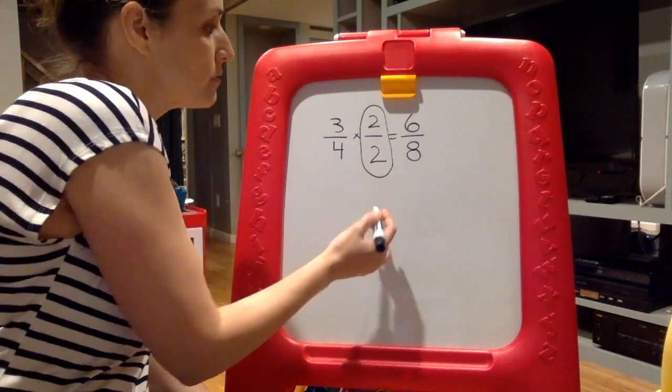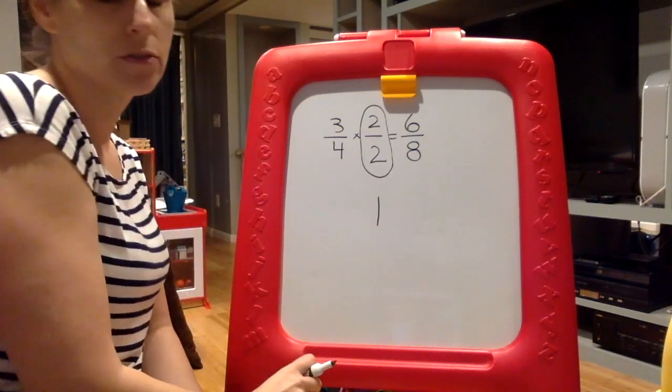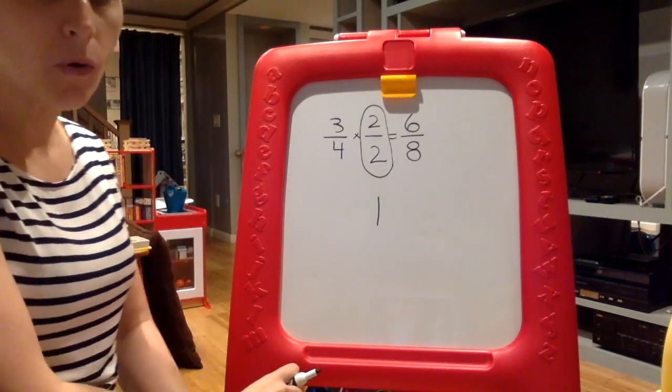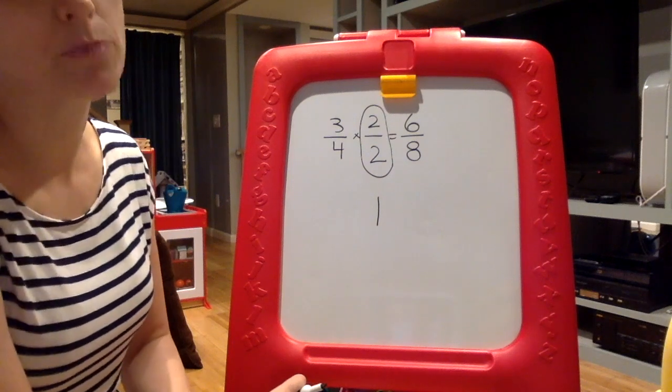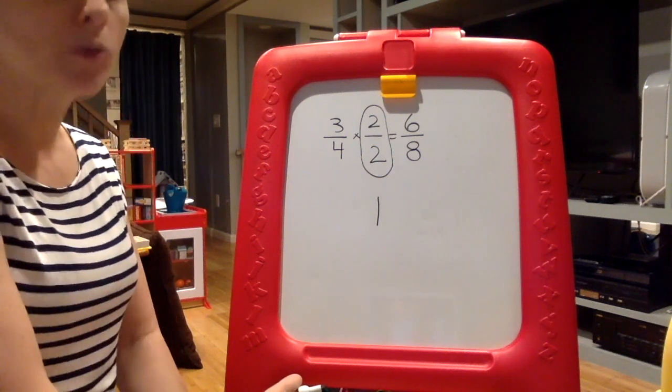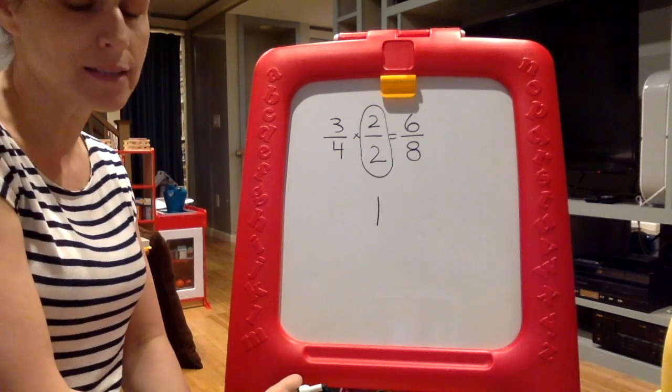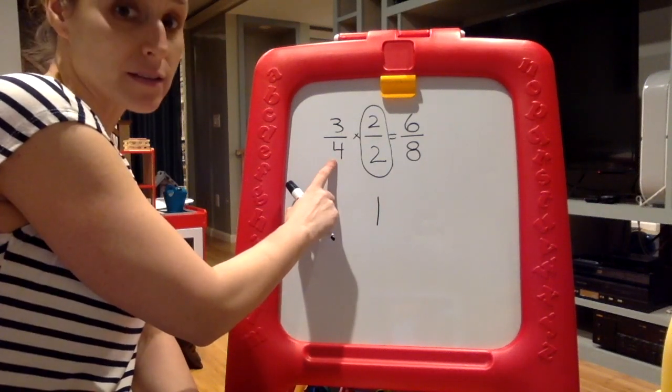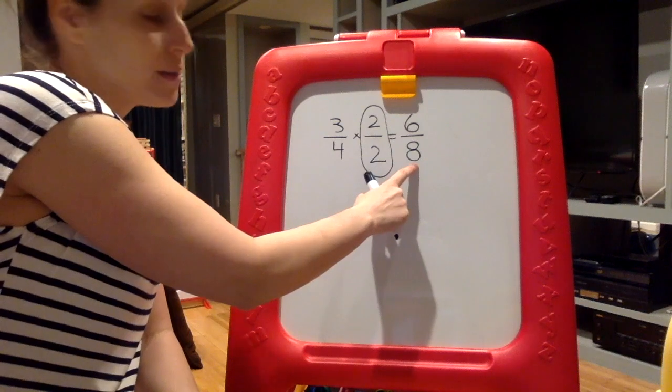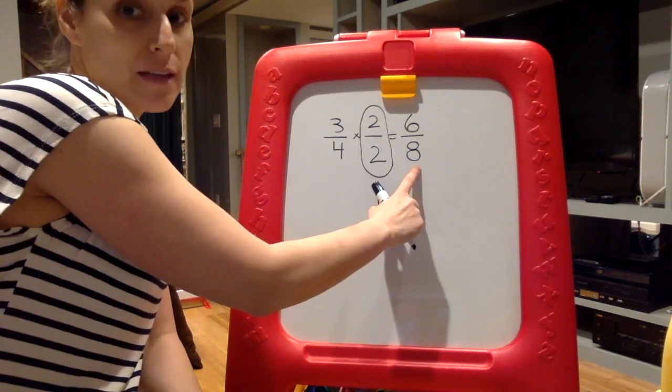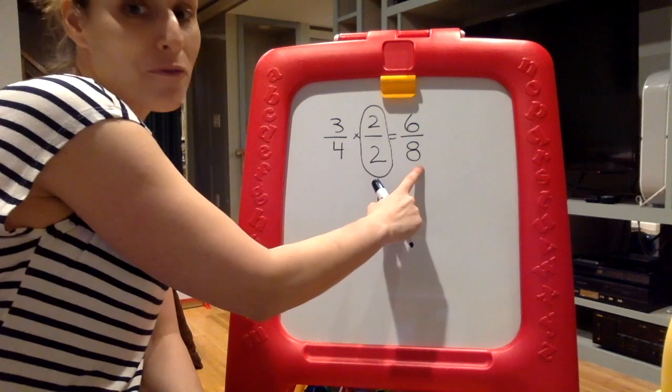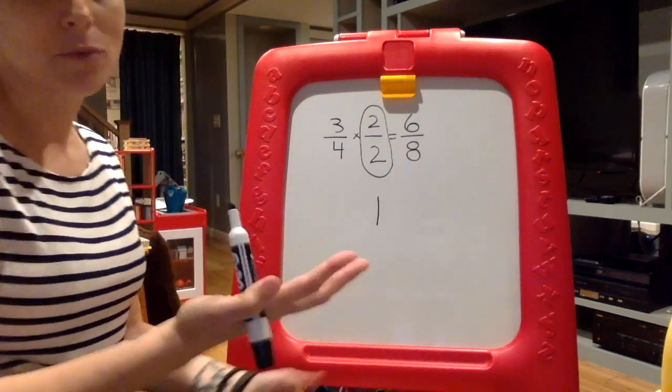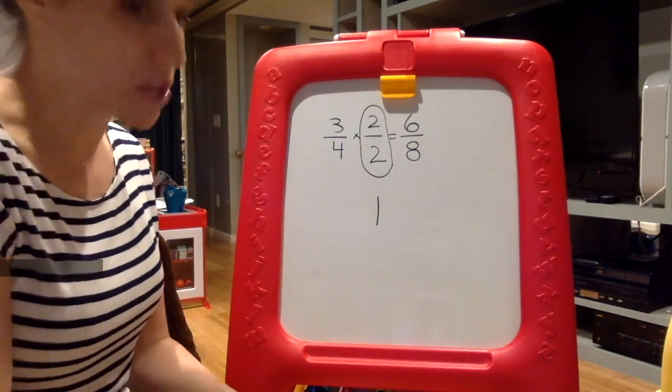This has a value of one. Two halves equal one whole. Identity property of multiplication says any number multiplied by one is itself. So what it's saying is even though these size pieces are different, they occupy the same amount of space, therefore having the same value, thus making them equivalent. It's a quick way to check.